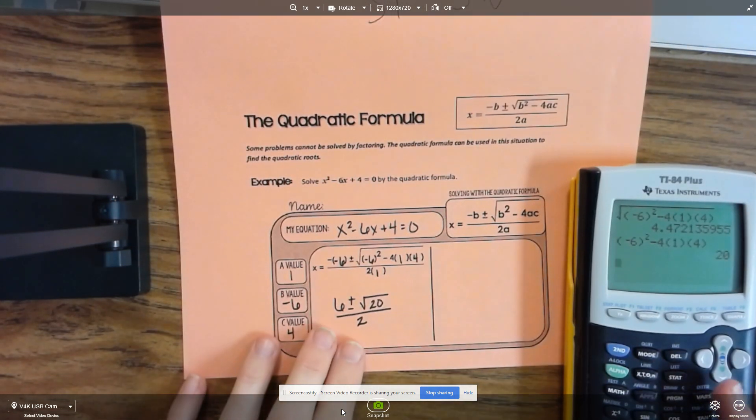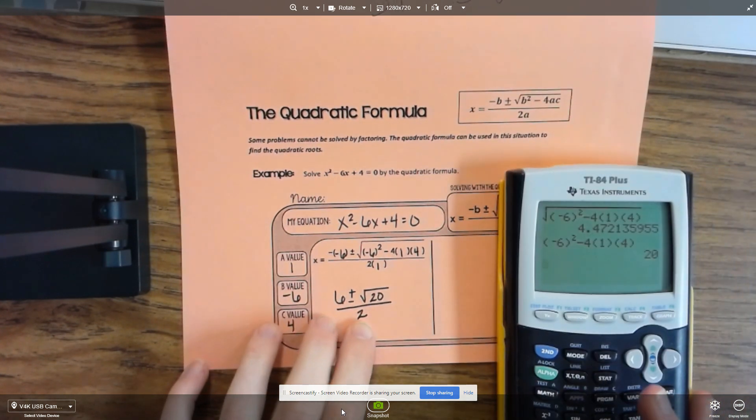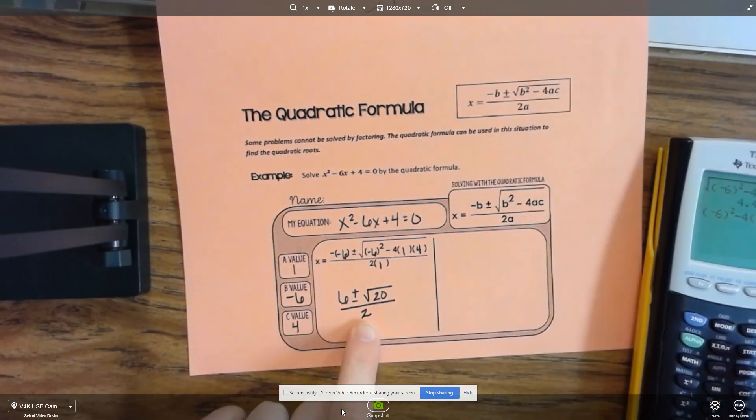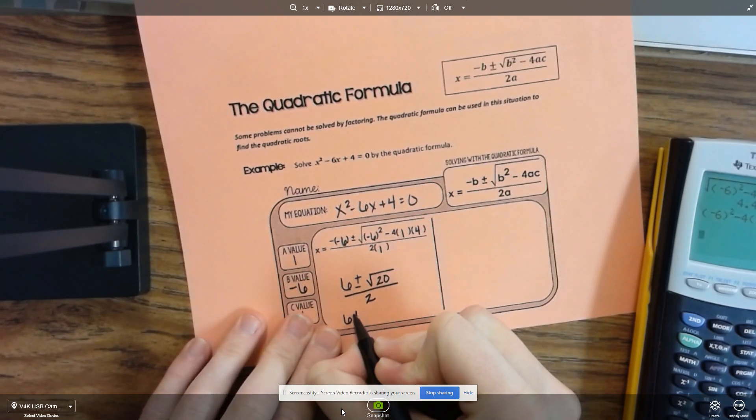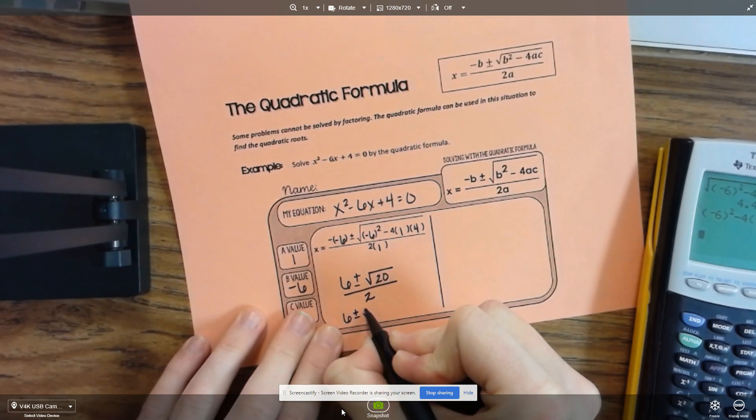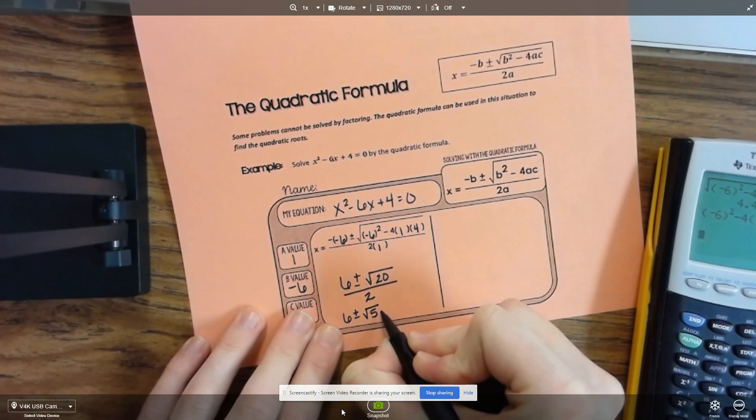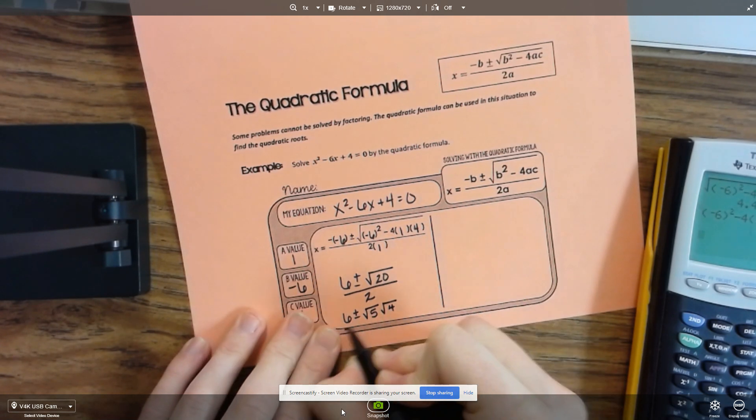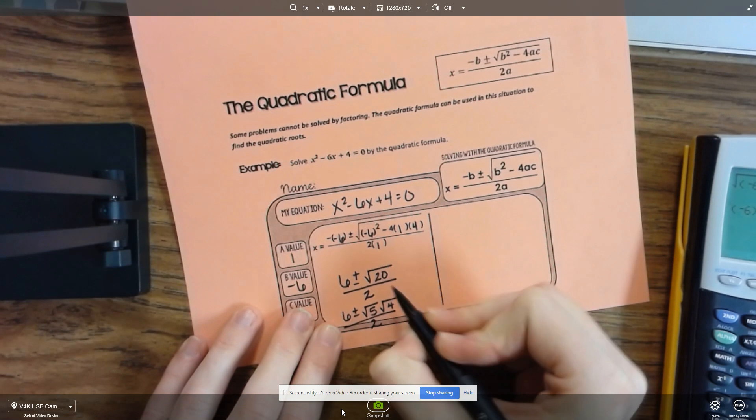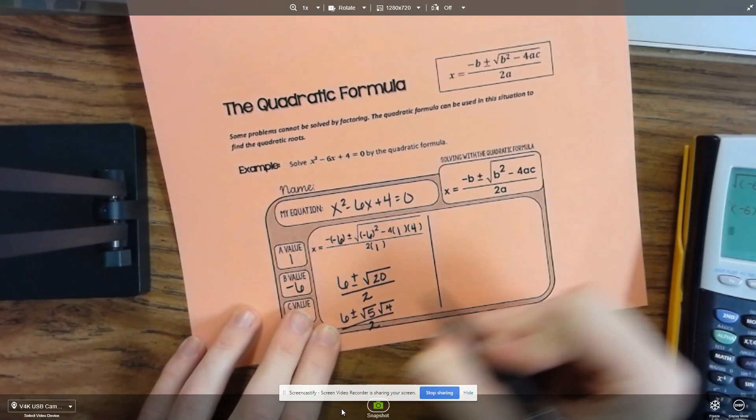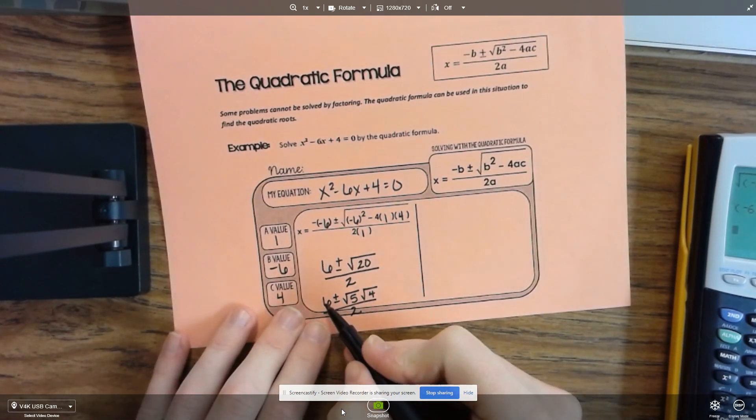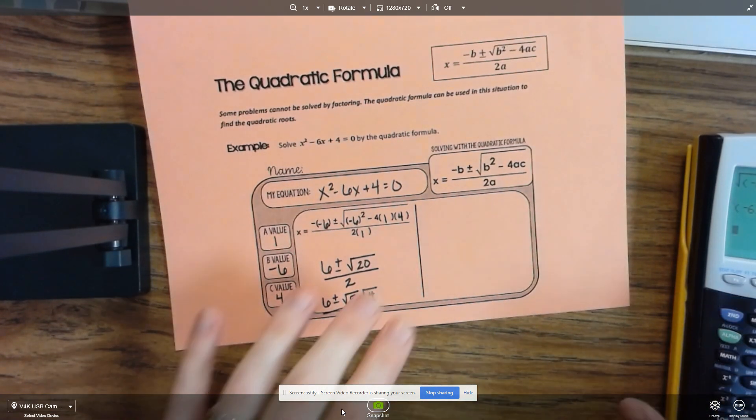There's several different ways that you can do that. One way is to simplify your radical, which would be the square root of 5 times the square root of 4 divided by 2, and the square root of 4 would give you a 2. So those would cancel, and then 6 divided by 2 would give you a 3.